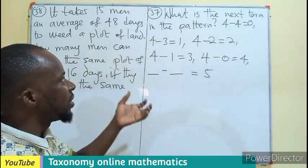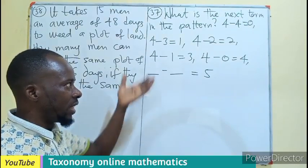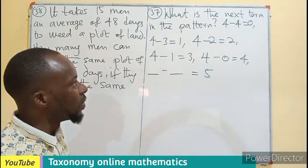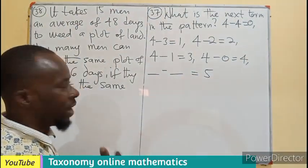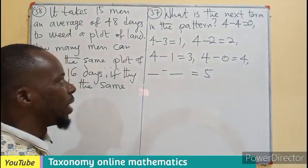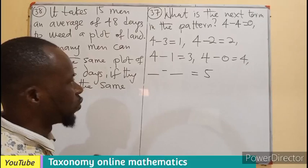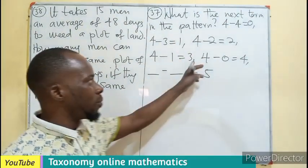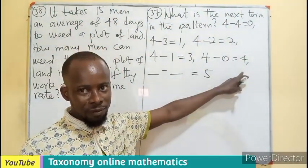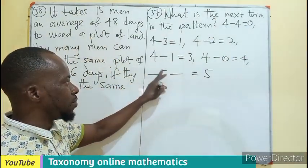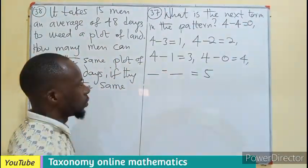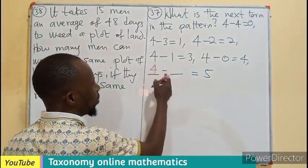Question 37. What is the next term in the pattern? This is the pattern given to us. 4 minus 4 is 0, 4 minus 3 is 1, 4 minus 2 is 2, 4 minus 1 is 3, 4 minus 0 is 4. So the next term here, something minus something to give us 5.